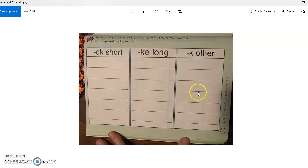And the last page of sort 11 is where you actually get practice writing those words. So it gives you this direction to write on the lines words from your sort that have the final K sound spelled CK, KE, and K. So you'll be using those words to practice spelling them.